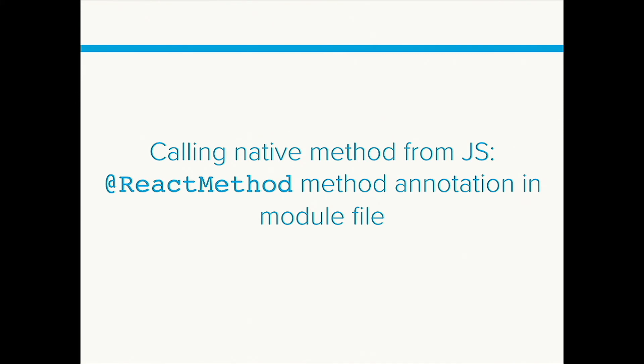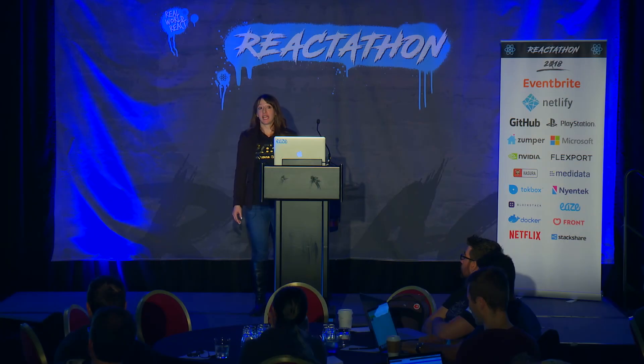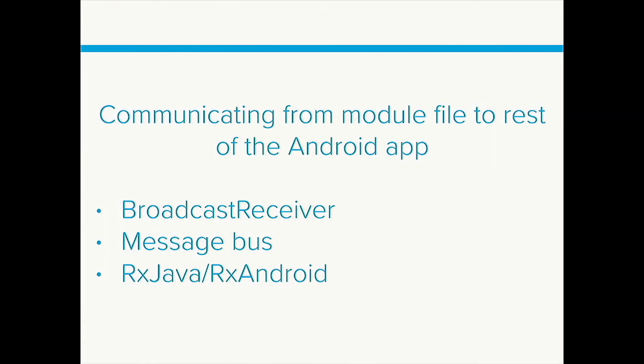When calling a native method from JavaScript, after adding that boilerplate, you add a module file with a ReactMethod annotation — similar to ECMAScript decorators in JavaScript — which exposes the method so it can be called by JavaScript. You can only send information up to that module file in native code, and then use whatever Android convention you choose — broadcast receiver, message bus, RxJava, and so forth — to communicate the result throughout the rest of the app.